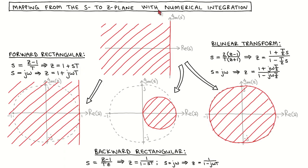Let's look at where the stable region of the s-plane maps to in the z-plane. The boundary between the stable and unstable regions in the s-plane is the imaginary axis, given by s equal to j omega. When we insert this into the equation describing the mapping, we get an equation with a real part of 1 and imaginary part of j omega T. This boundary is then mapped to a vertical line going through z equal to 1, with the stable region mapped to the left-hand side and the unstable region to the right-hand side.